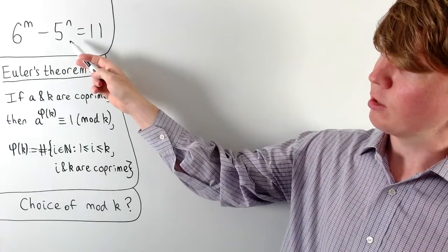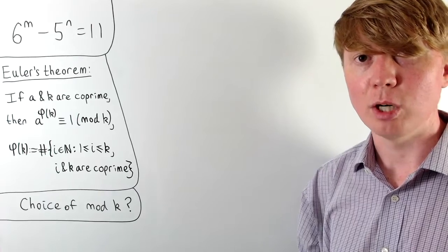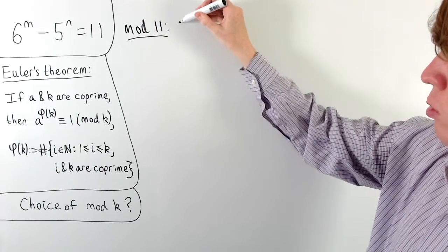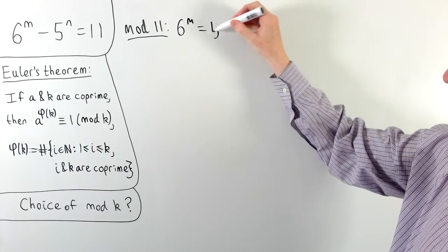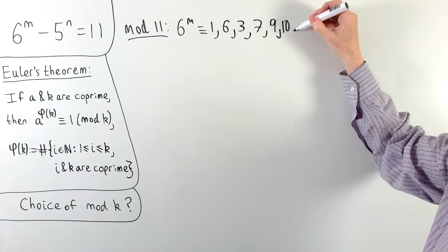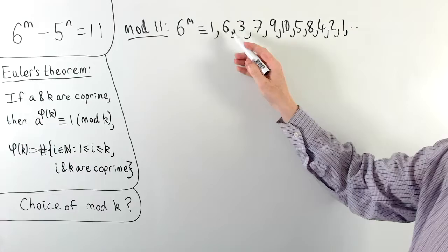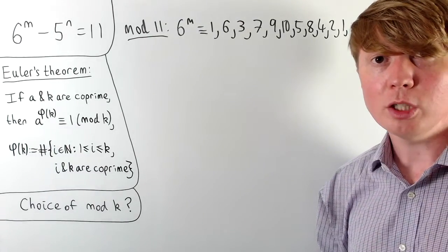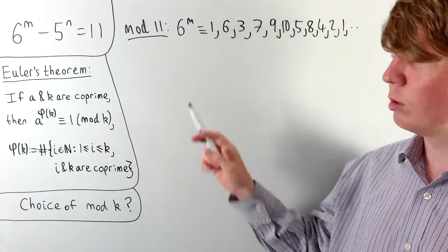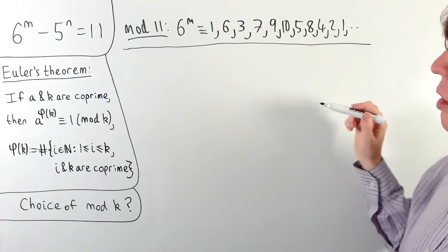We could consider taking things modulo 5, 6, or 11 to simplify the equation. For example, modulo 11: powers of 6 mod 11 go 1, 6, 3 (since 36 ≡ 3), and actually cycle through all possible remainders from 1 to 10 before looping back — going 1, 6, 3, 7, 9, 8, 4, 2, and so on. So working modulo 11, the power of 6 could be absolutely anything, and we can't rule anything out the way we did with 24.